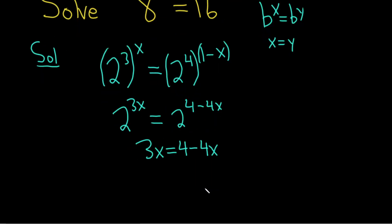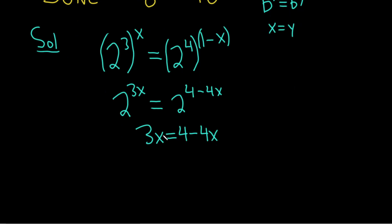So now we have to solve for x. Maybe we can just add this 4x to both sides. So plus 4x plus 4x. These cancel. So we have 7x and that's equal to 4.